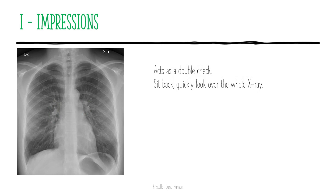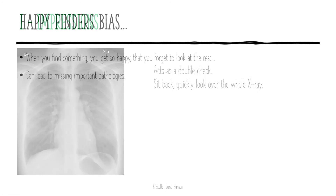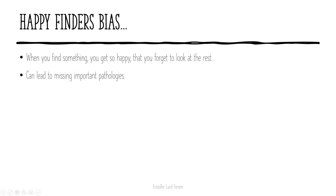Lastly, we have I, which stands for impressions. This acts as a double check where you sit back, quickly look over the x-ray, and see if you have missed anything — just get a general impression of whether this is a normal or pathological x-ray. A last important point is called happy finder's bias: when someone finds something, they usually get so happy that they forget to look at the rest of the x-ray, which can lead to missing important pathologies. When you do find something, don't stop — scan over the rest of the lung to see if there is something more.